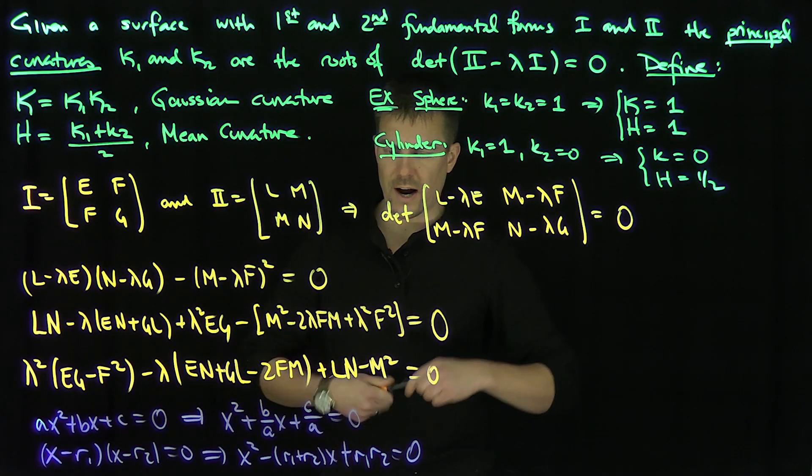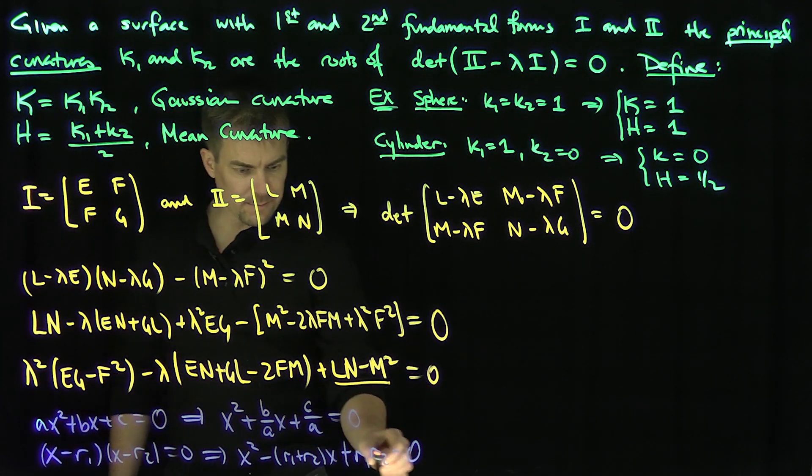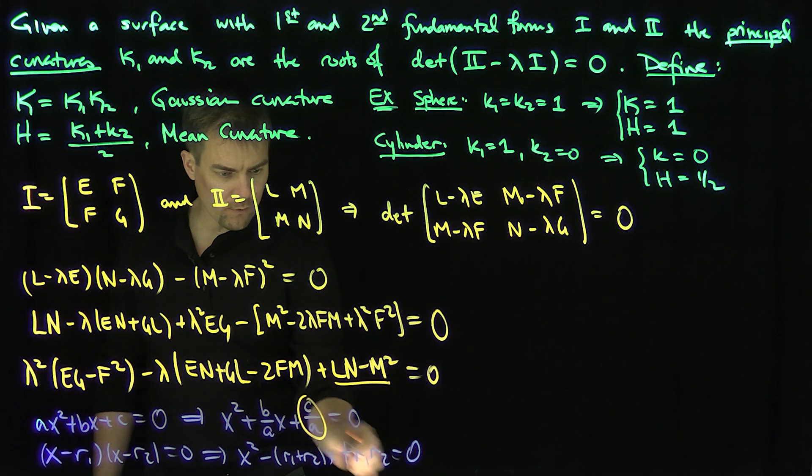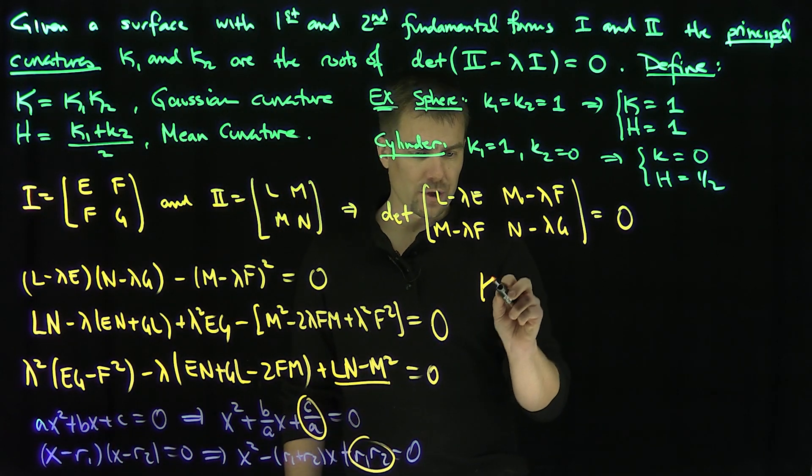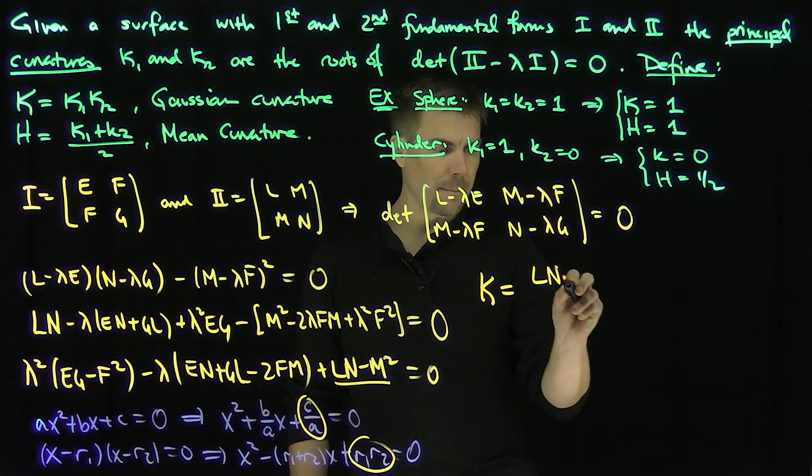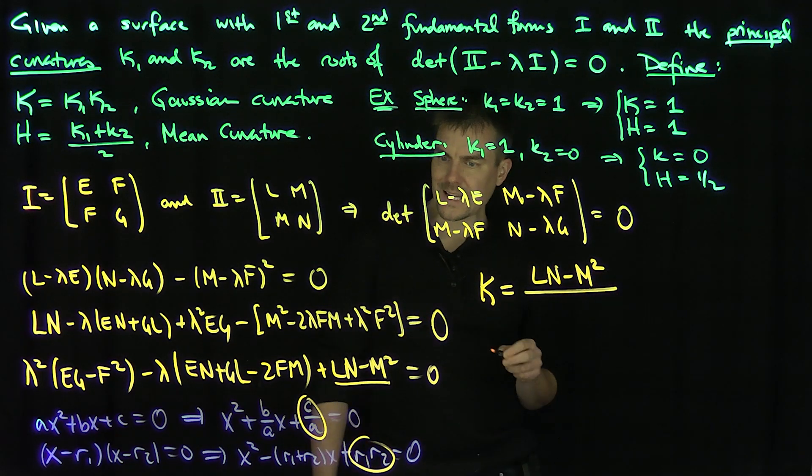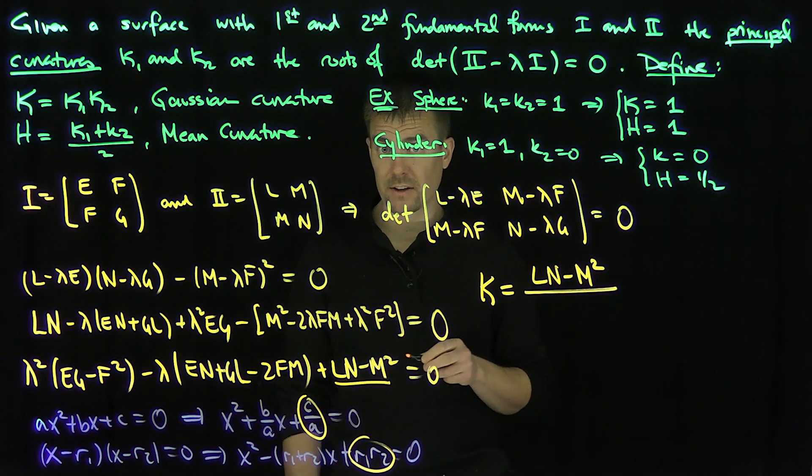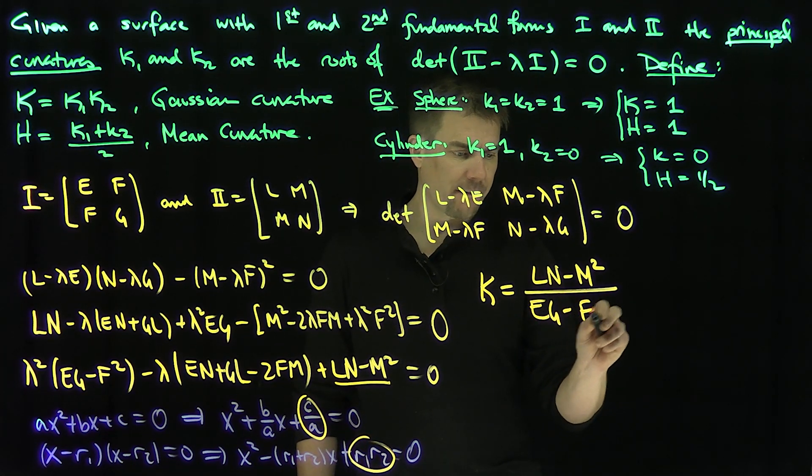So in other words, what we're saying is the product of the roots of these things, of course, the roots of this expression are K1 and K2. And so what can I say? I can say that if I look at this expression, that's my C over A. C over A has to be R1 R2 or K1 K2. So my Gaussian curvature K is equal to L N minus M squared over EG minus F squared.